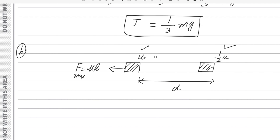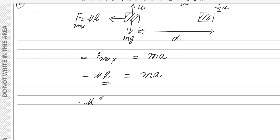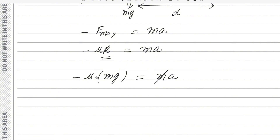The deceleration can be found using Newton's second law. The only force acting during the motion is friction, acting in the negative direction: −F max = ma. Since F max = mu R and R = mg (no vertical tension now), we get −mu·mg = ma. Canceling m from both sides and substituting mu = 1/3, the acceleration is −(1/3)g.